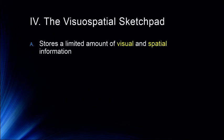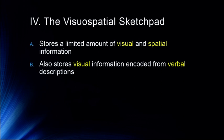The visual spatial sketchpad stores a limited amount of visual and spatial information. It also stores visual information encoded from verbal descriptions — so this is when you're reading a novel and trying to picture what's happening. That visual information, as we're trying to picture it from a verbal description, is occurring in the visual spatial sketchpad.